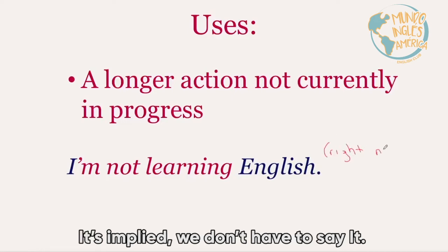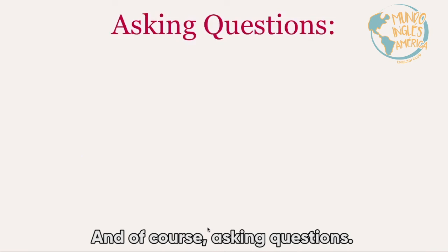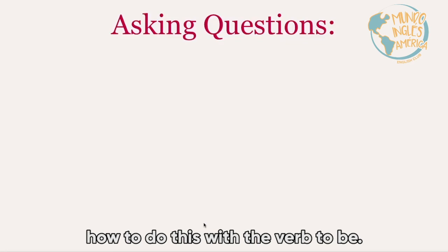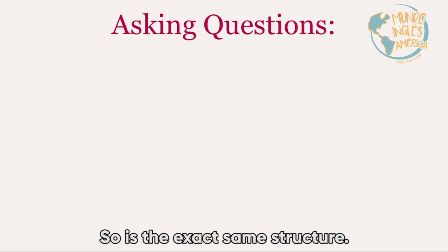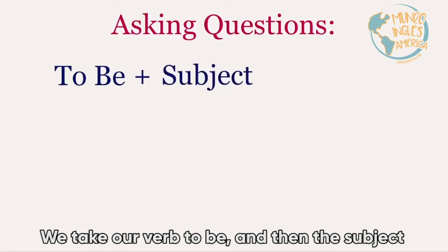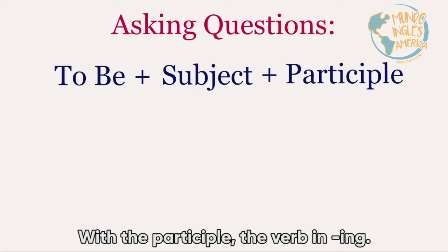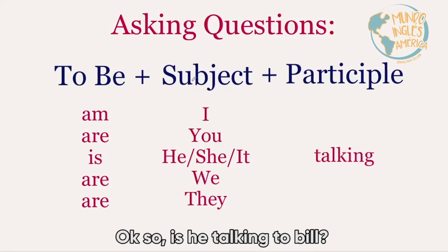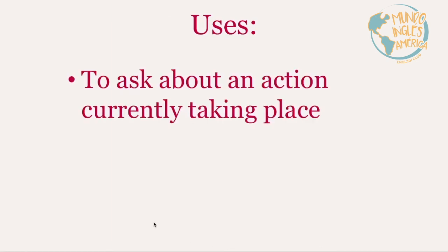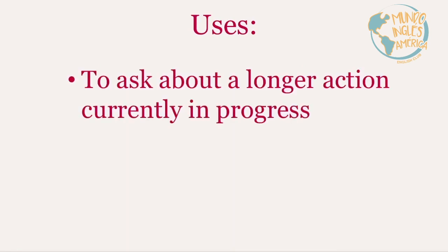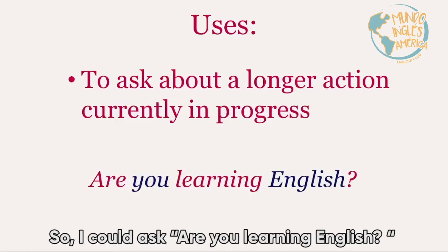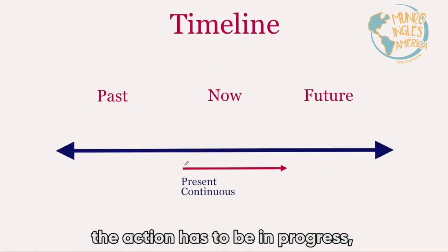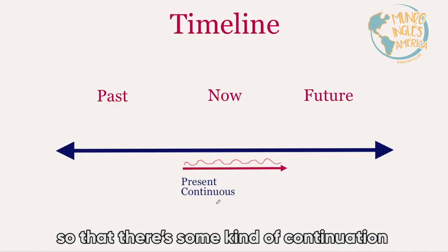Asking questions is also very simple because you already know how to do this with the verb 'to be'. We take the verb 'to be', then the subject, then the participle — the verb with -ing. For example: 'Is he talking to Bill?' We use this to ask about an action currently taking place or a longer action currently in progress — for example: 'Are you learning English?'